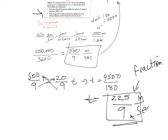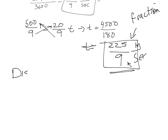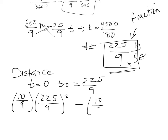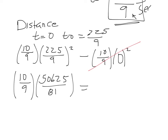The second part asks what distance the aircraft travels in that time. Go back to the original function: plug in t = 225/9 into D = (10/9)t². So that's (10/9) times (225/9) squared. This becomes 50,625 over 81. Dividing out by 9 twice gives the final answer — leave it as a fraction as MyMathLab requests.